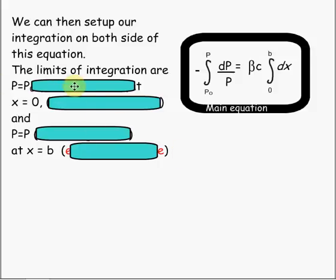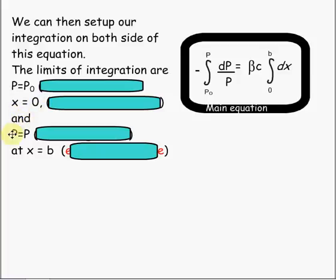Let's set up our integration on both sides of this equation. The limits of integration are P-naught at the initial power, at x equals zero, and the finishing power P at x equals b. Here we've set up our integration. We have our initial power; we're integrating from our initial power to our remaining power — the change in power over the initial power.